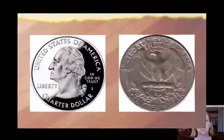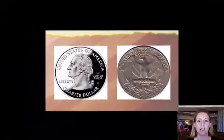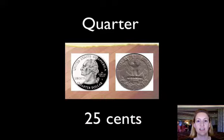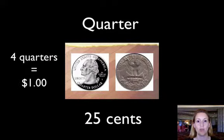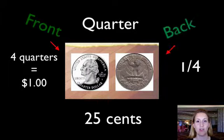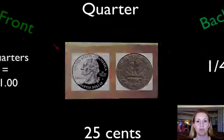The first coin we're going to look at is a quarter. A quarter is worth 25 cents. There are four quarters in a dollar. It's called a quarter because 25 cents is a quarter, or one-fourth, of a dollar. This is the front of a quarter and this is the back of a quarter.